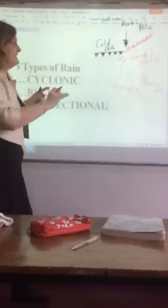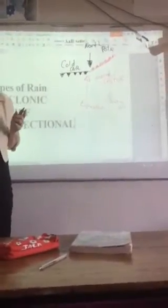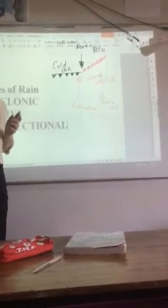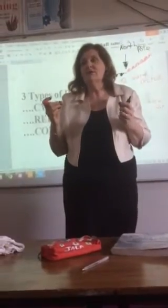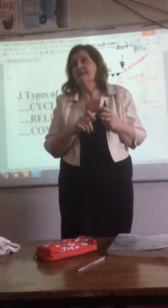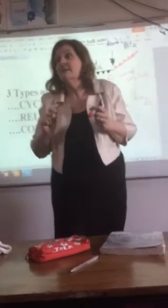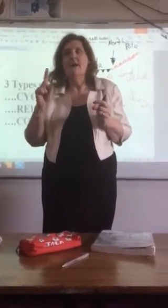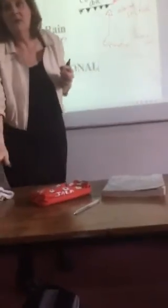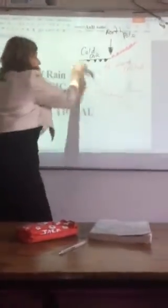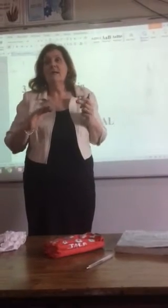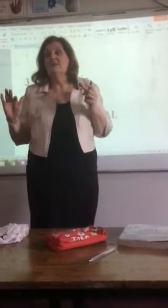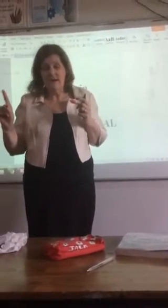This whole system here is called a frontal depression, and it forms out in the middle of the Atlantic Ocean. Why do we have so many frontal depressions forming off the coast of Ireland? Because we're halfway between the equator and the North Pole. Before class, we were outside and we saw that the sky was covered in a complete blanket of cloud and it was drizzling. What was the name of that cloud? Stratus cloud.